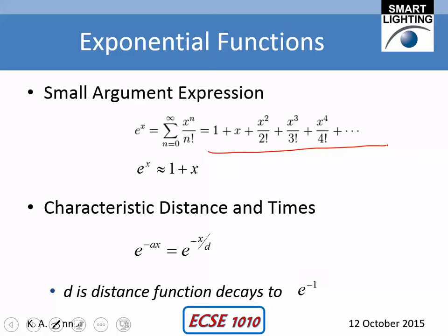Small argument expression. These are incredibly important and useful. Because we have this great big long series expansion, if this number x is really small, then x squared over 2 is much smaller than x, and this is even smaller yet. Under the right conditions where it's really small, we just neglect all those things and keep the first two terms. e to the x is approximately equal to 1 plus x. You can show this by evaluating e to the x with your calculator and comparing it to 1 plus x.